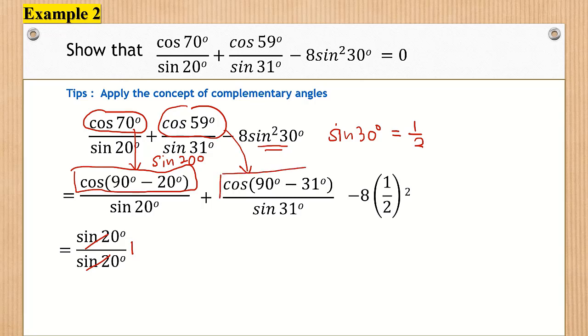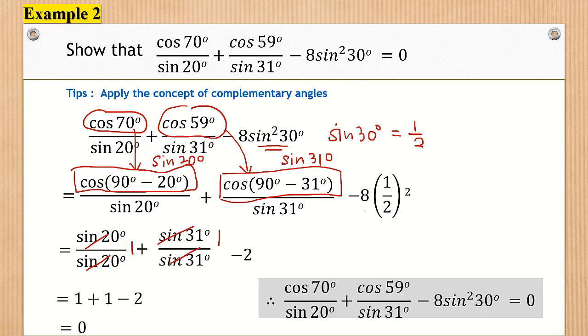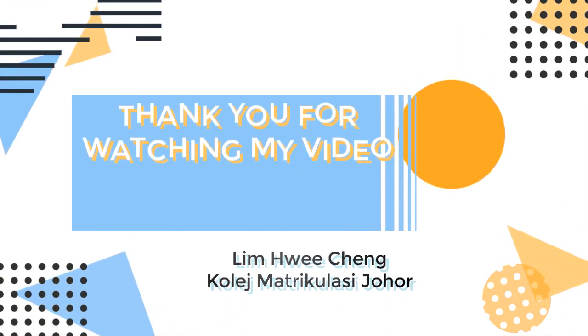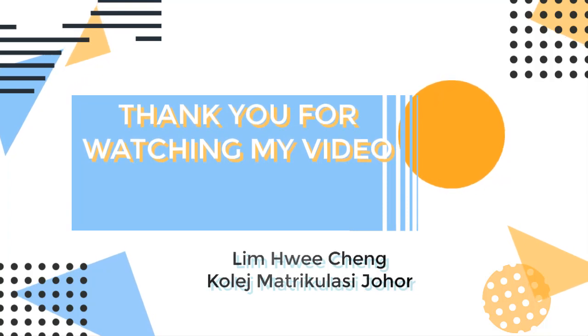Same thing here. We are going to have sine 31 degrees divided by sine 31 degrees, which simplifies to 1. And for this case, we are going to have minus 2. So we have 1 plus 1 minus 2, which is equivalent to 0. Therefore, cosine 70 degrees divided by sine 20 degrees, plus cosine 59 degrees over sine 31 degrees, minus 8 sine squared 30 degrees equals 0.